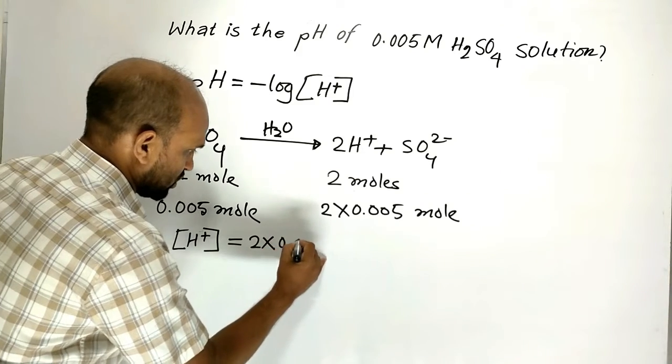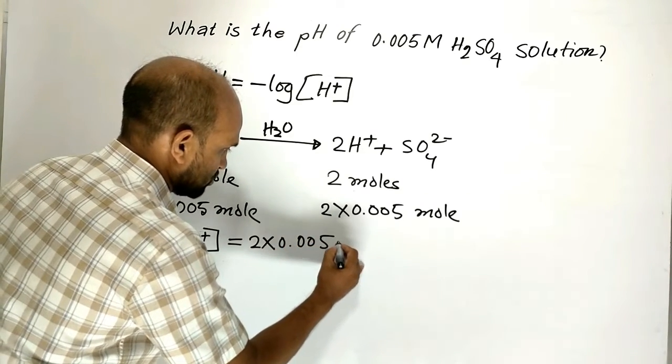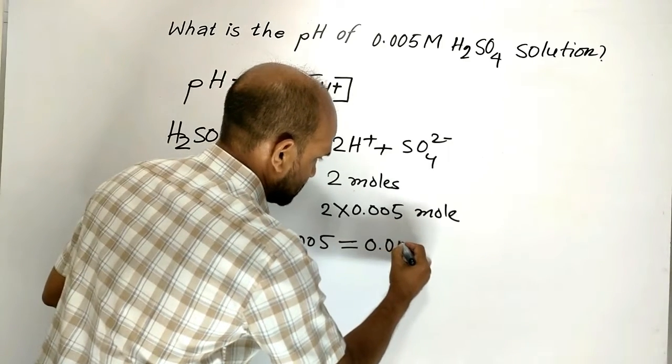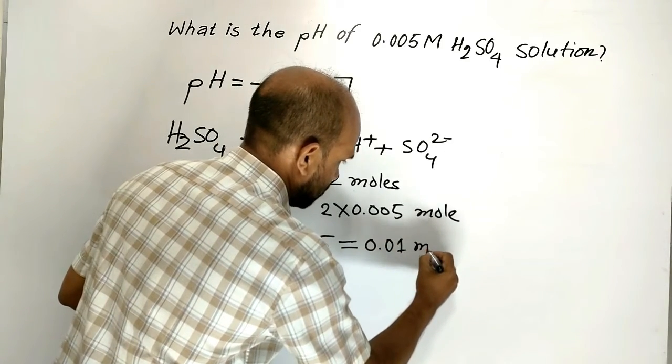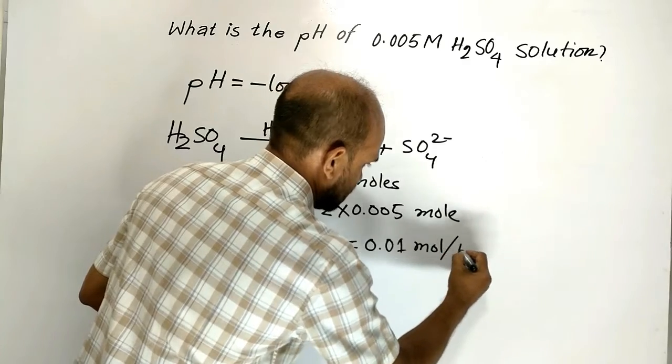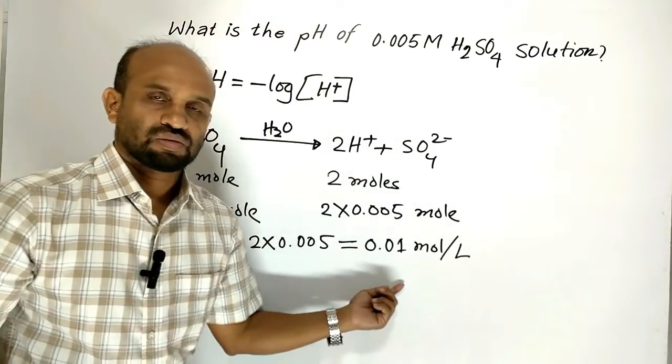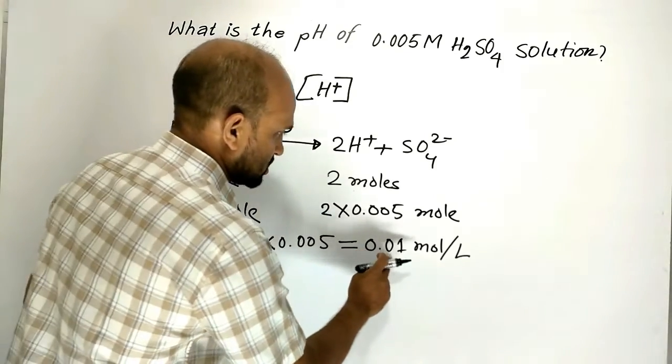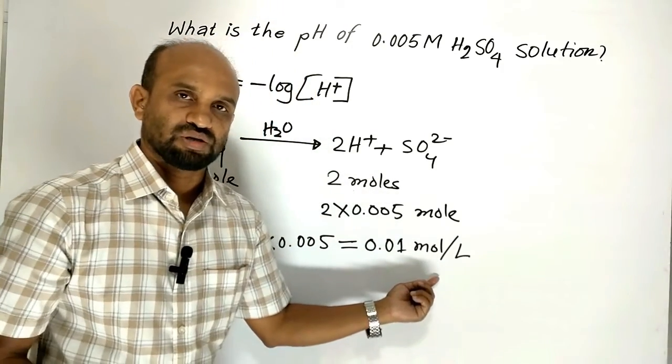So we can write: concentration of hydrogen ion is 2×0.005, which equals 0.01 mole per liter. That is, the concentration of proton is 0.01 mole per liter.